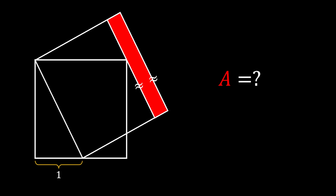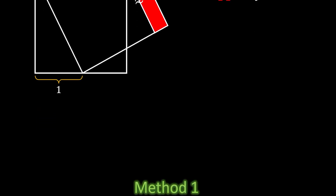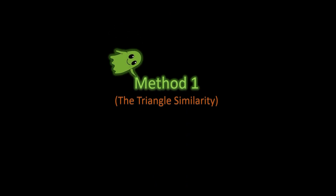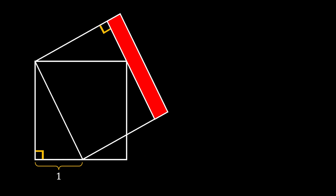Alright, let's get to the solution. I'm going to solve this problem using two different methods. The first method is the method of triangle similarity. First, we are going to mark some vertices — we'll mark all the vertices of our small square as A, B, C, and D.